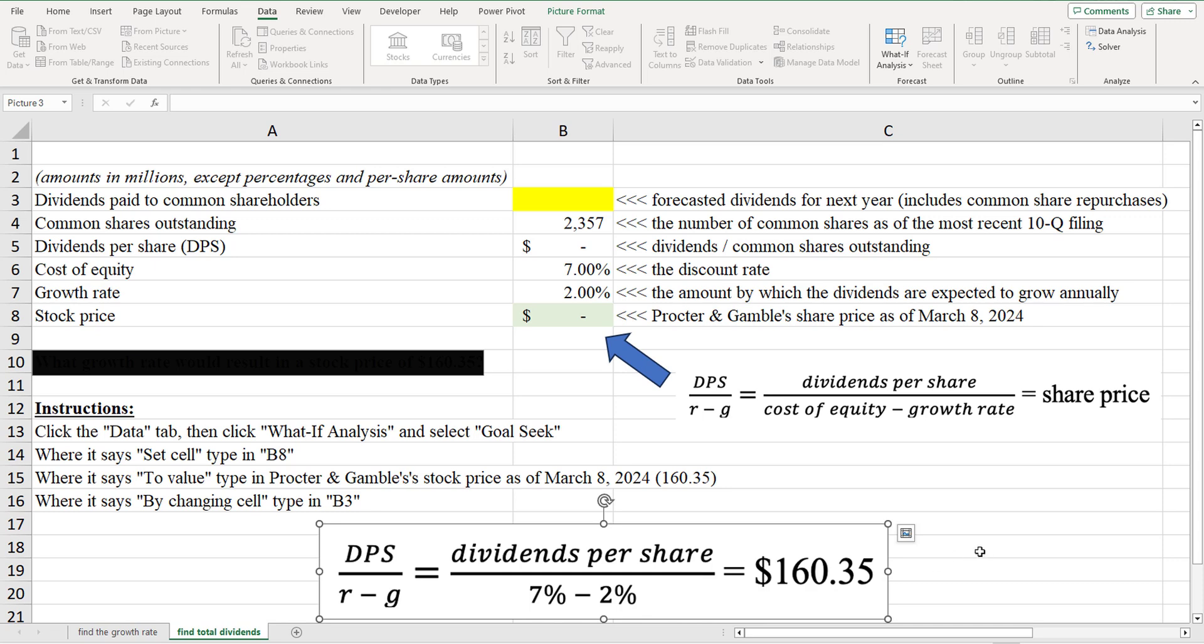given this Gordon growth model that we have, assuming a cost of equity of 7%, growth rate of 2%, and we observe the share price $160.35, what must be the dividends per share that the market is expecting for next year for Procter & Gamble that we would arrive at the share price. Okay, so what is the expected dividends per share?